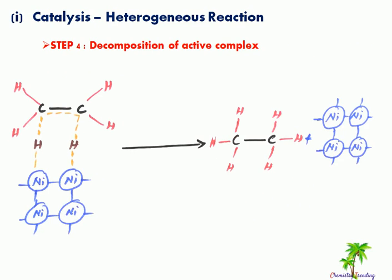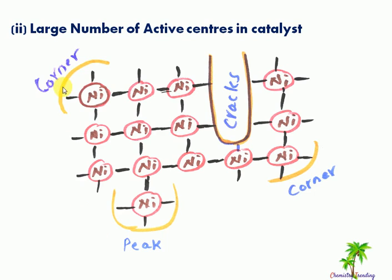Step four: decomposition of the active complex. The active complex decomposes — the gas molecules are removed from the solid catalyst surface. The partial chemical bonds break, and new bonds form between hydrogen and ethylene, converting ethylene into ethane. The nickel surface acts as the catalyst throughout this mechanism of heterogeneous catalysis reactions.